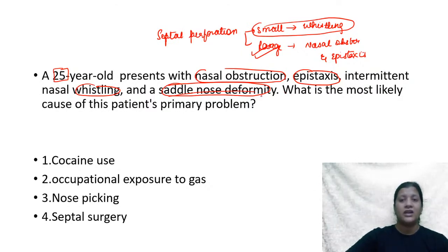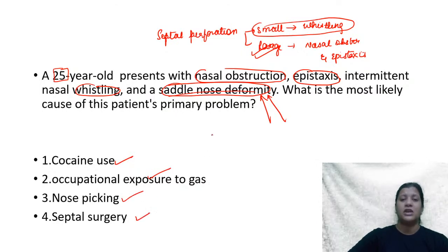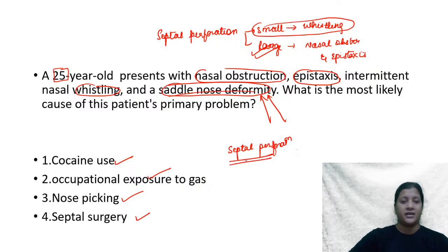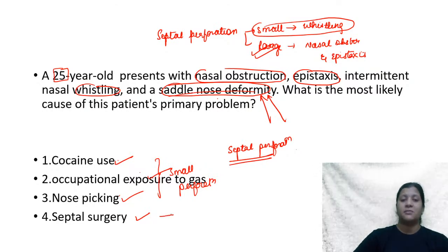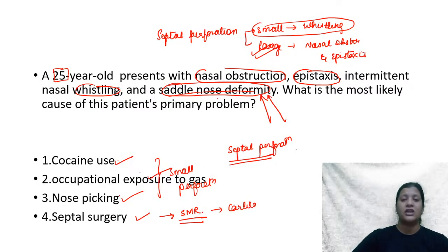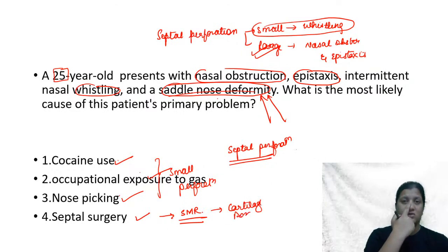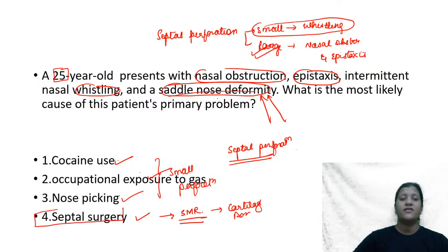Cocaine abuse, exposure to gases, and nose picking can all cause septal perforation, but these typically cause small perforations. Whenever there is a large perforation and a saddle nose deformity together, you must think of septal surgery — specifically submucosal resection (SMR). In SMR, resection of cartilage and bone can cause loss of dorsal support, resulting in saddle nose deformity. The answer is septal surgery.